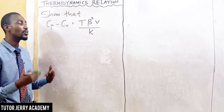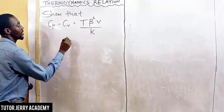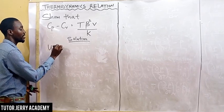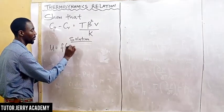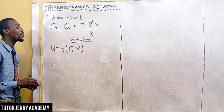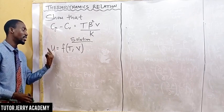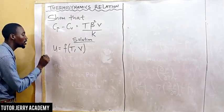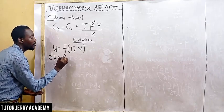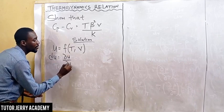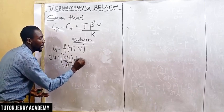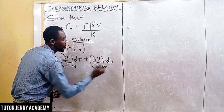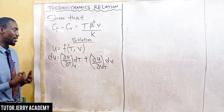The first thing we are going to do is recover from internal energy. We know that internal energy is a function of temperature and volume. So we are going to take the differential — we are going to differentiate the dependent variable u. So du equals the partial derivative of u with respect to T, keeping V constant, dT, plus the partial derivative of u with respect to V, keeping T constant, dV.